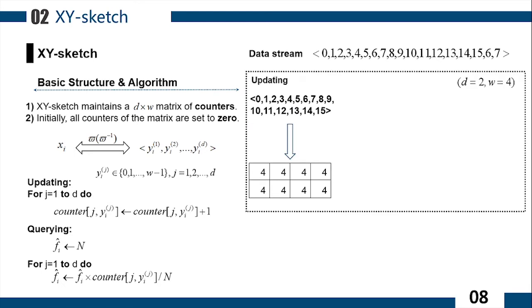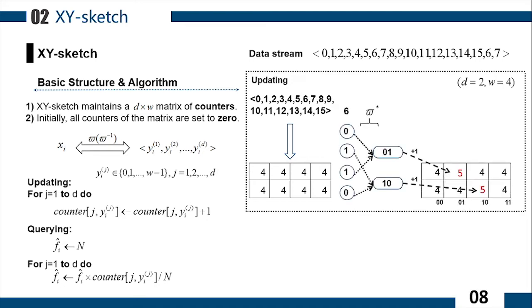We use an example to introduce XY-Sketch in detail. There is an XY-Sketch with four columns and two rows, and it has recorded 16 items. When data item 6 arrives, it is decomposed into 1 and 2 by the bijective function. Then, the corresponding counters are found in the first row of the second column and the second row of the third column. We add 1 in these two counters because data item 6 arrives only once.